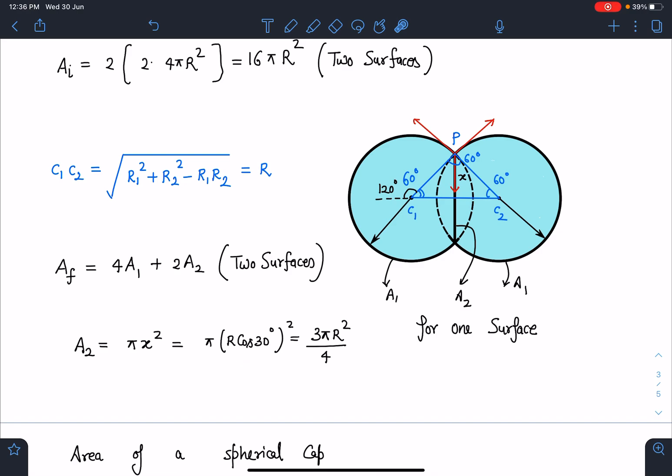Sorry, this will be cos 30 or sin 60, R sin 60 is R√3/2, so 3πR²/4 will be the A₂ value. I hope this part is clear.